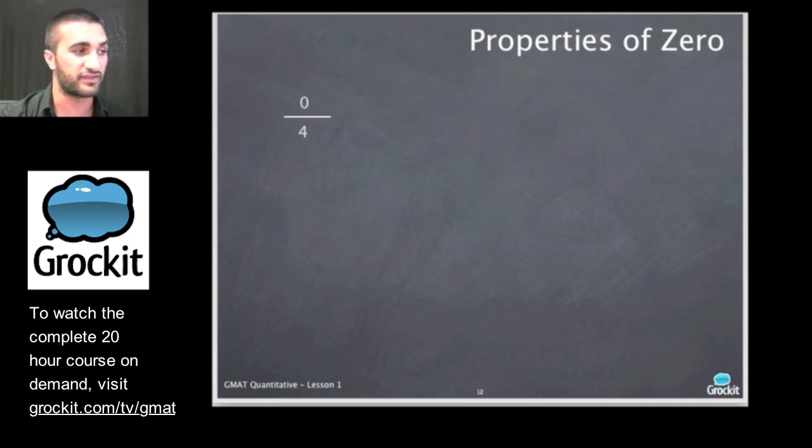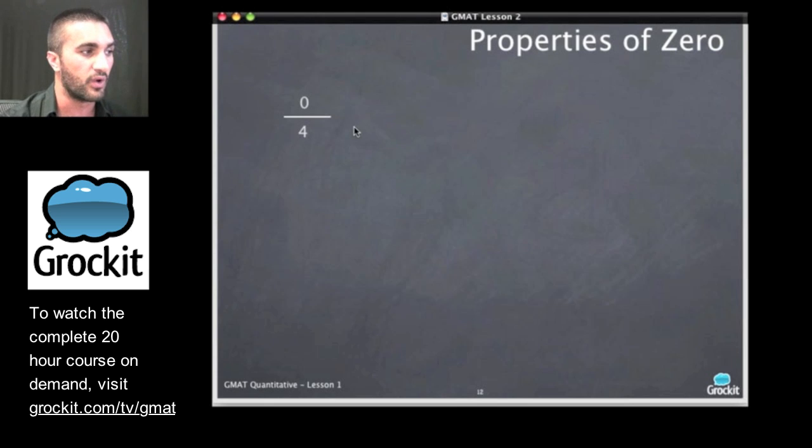Properties of zero that the GMAT likes to get us on. Zero divided by four, everyone give me your answer. It should be zero. That seems pretty straightforward.